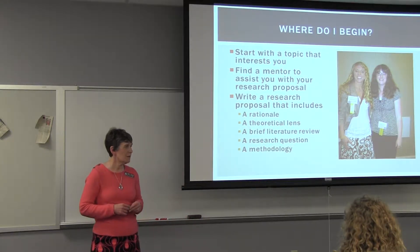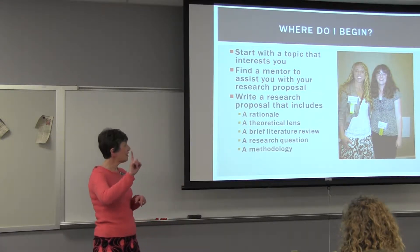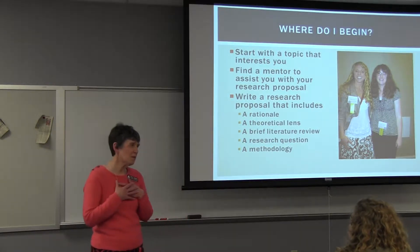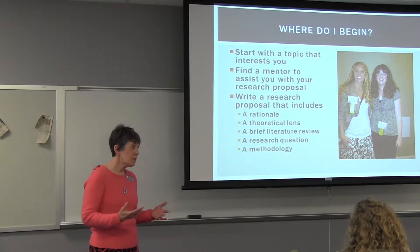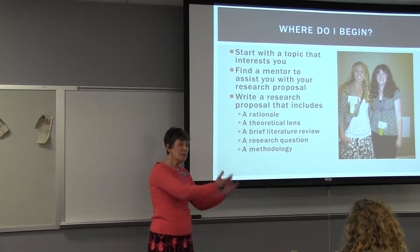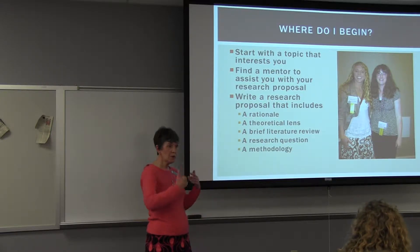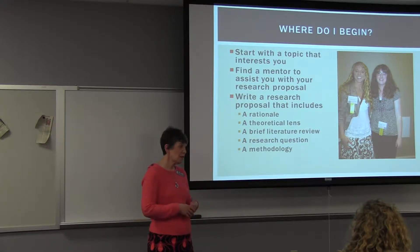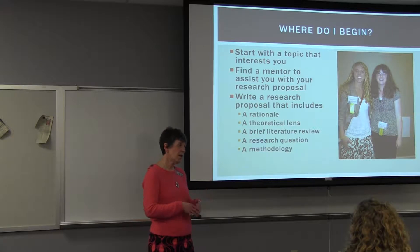Then you have a theoretical lens — how you're looking at what you're researching. In communication, for example, students can choose a variety of communication theories. Those who've taken basic speech and interpersonal classes have run across some of those. For example, there's a theory called uncertainty reduction, which simply means that people seek information when they're unsure about something, leading to either better understanding or pulling away from it. If I was using that as my lens, I would see whatever topic I was studying through those imaginary glasses. In the sciences, you'd use a theoretical approach already found in the literature that helps you analyze your research question.